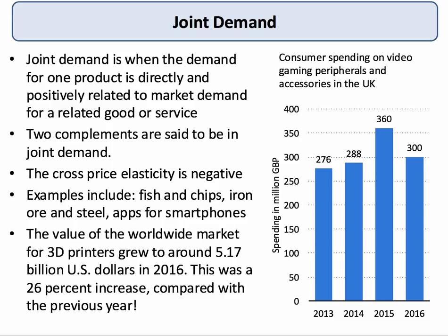Typically we tend to focus here on two complementary goods. Complements are in joint demand, and complements have a negative cross price elasticity of demand. If the price of one good goes down, people buy more of that product. As a result, they tend to buy more of the related product — joint demand.